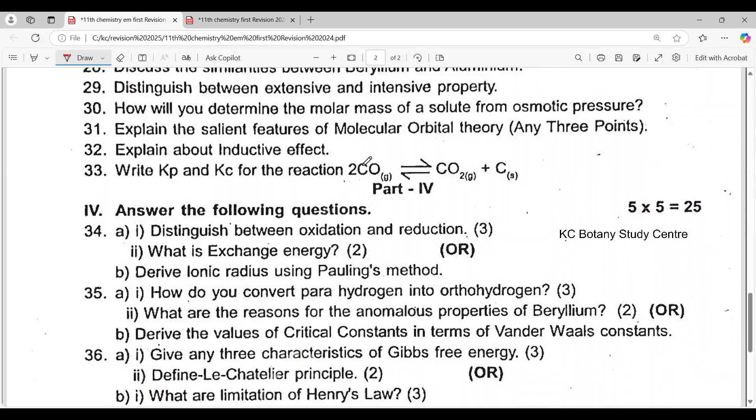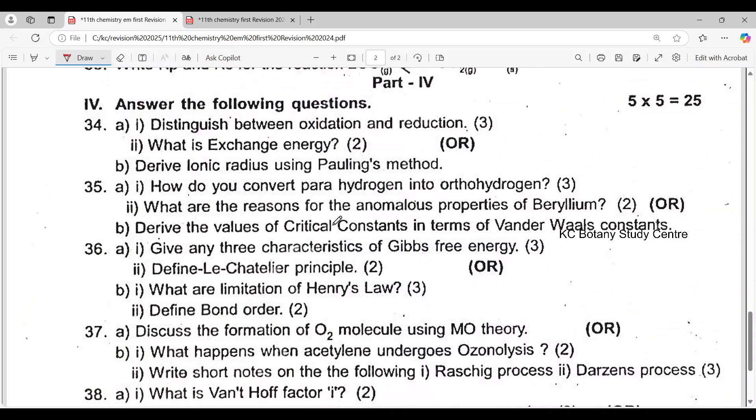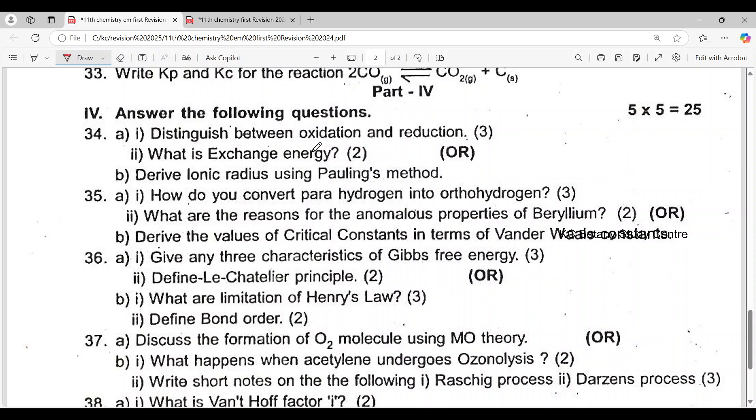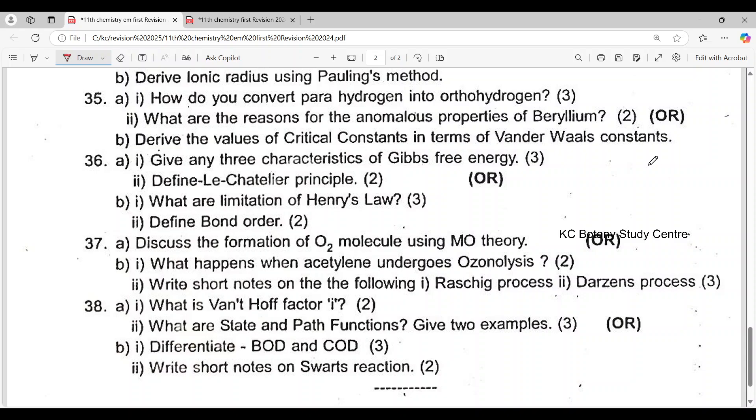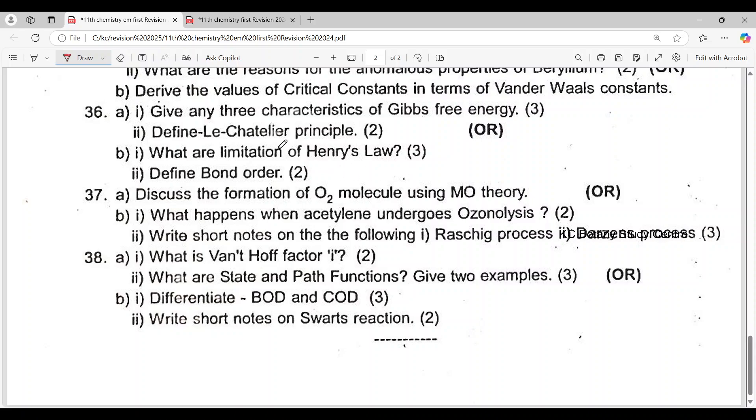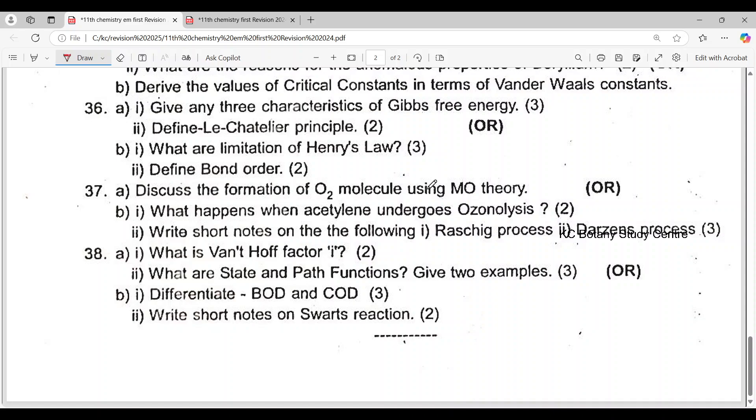You can see the model question papers, KP and KC reaction. On the 5 marks we have 2 marks, 3 marks - difference between oxidation and reduction, energy, ionic radius using Pauling's method. How do you convert para hydrogen into ortho hydrogen? What are the reasons for anomalous properties? Derive the values of critical constants in terms of Vander Waals constants. Gibbs free energy, Le Chatelier principle, limitation of Henry's law, bond order. That's why we use MO theory. Acetone undergoes ozonolysis. Hoff factor, BOD, COD, the difference. That's the Swartz reaction.